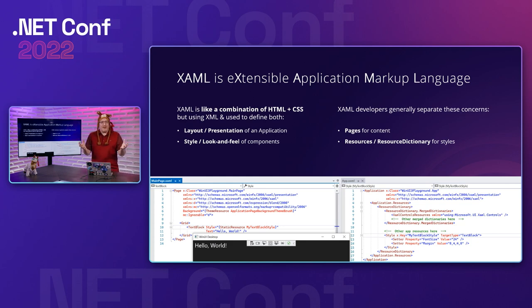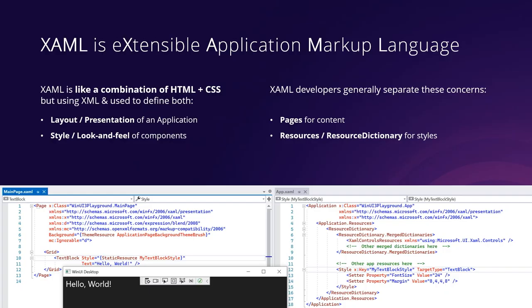So how do we get started with development? The first thing to understand is XAML — Extensible Application Markup Language. It's a way to define your user interface in XML. If you're familiar with web technologies, think of it as a combination of HTML and CSS: it defines both the layout and presentation of your application, as well as the style and look and feel of components. However, XAML developers typically separate these concerns into separate files.